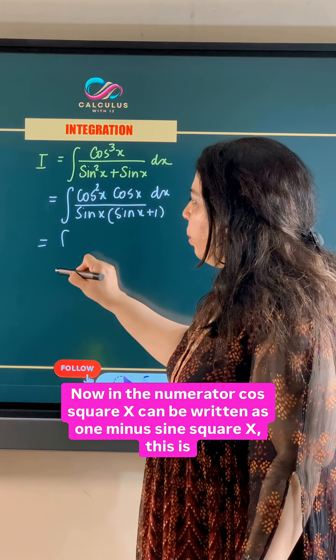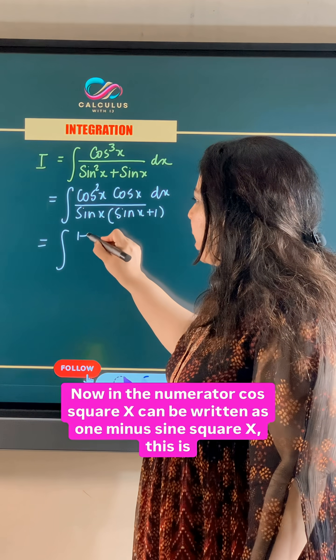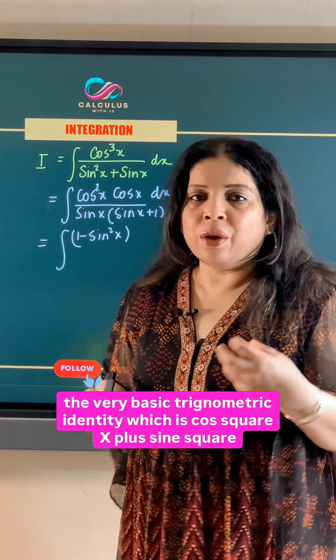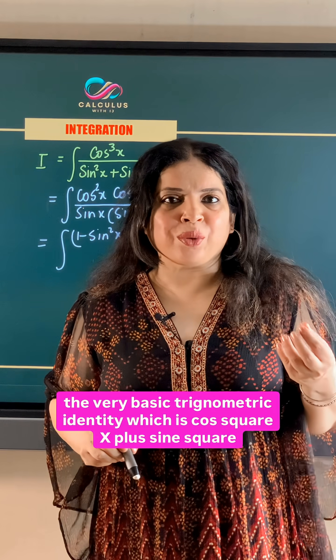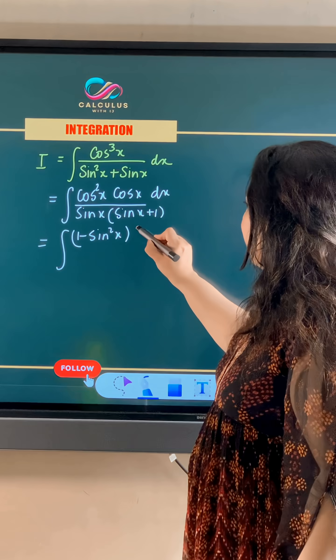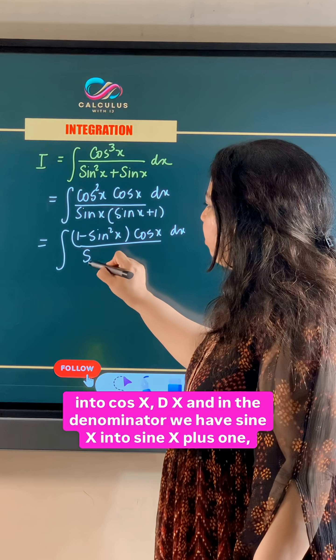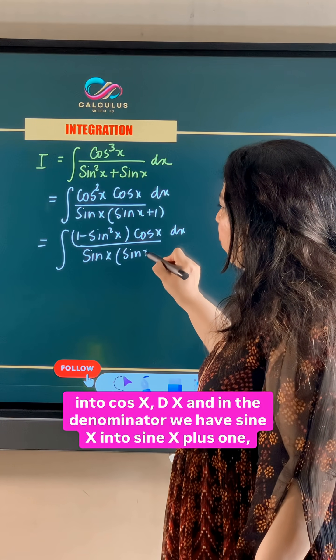Now in the numerator, cos square x can be written as 1 minus sin square x. This is the very basic trigonometric identity: cos square x plus sin square x is equal to 1, into cos x dx, and in the denominator we have sin x into sin x plus 1.